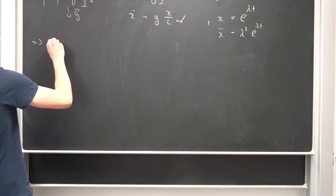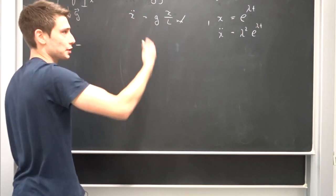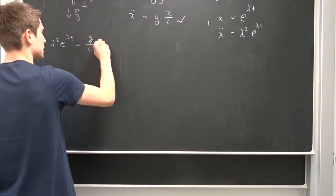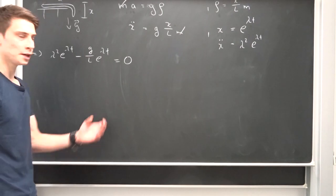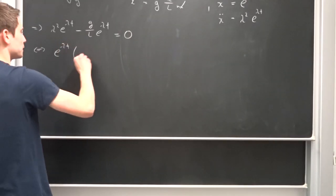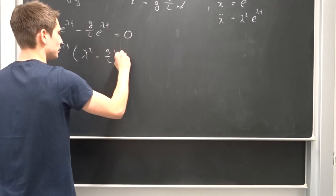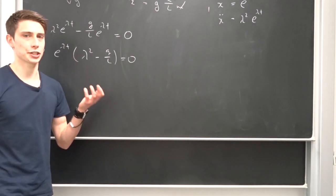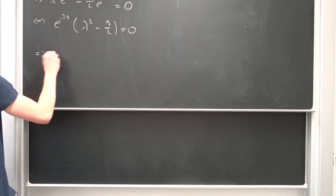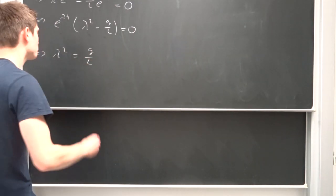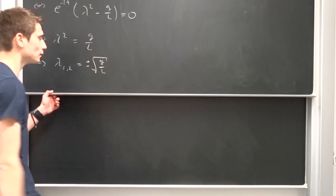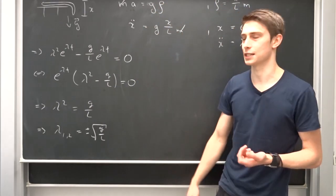Differentiating x = e^(λt) twice gives λ² · e^(λt). Plugging in, we get: λ² · e^(λt) − (g/L) · e^(λt) = 0. Factoring out e^(λt): e^(λt) · (λ² − g/L) = 0. Since the exponential can't be zero, we solve λ² = g/L. Taking the square root: λ₁,₂ = ±√(g/L).